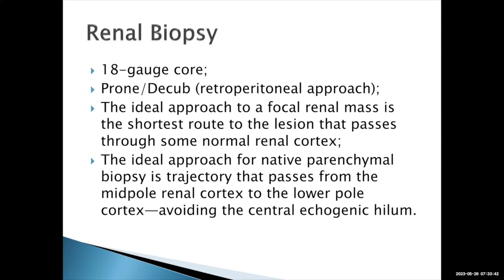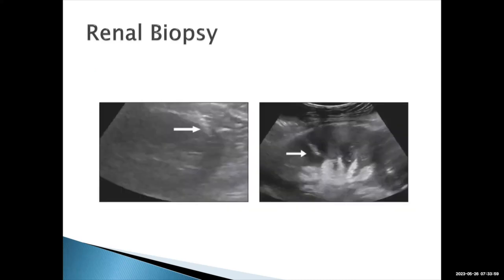Here's an example of a native renal parenchymal biopsy in the sagittal plane. You can see the kidney — cranial end, caudal end — with the biopsy needle going from the mid-pole toward the lower pole cortex, not heading toward the sinus. If the needle gets beyond the cortex-sinus junction and into the sinus, you risk bleeding into the collecting system and potentially pseudoaneurysms. The preferred approach keeps the needle in the cortex. For focal renal biopsies, we generally do two to three core biopsies, which most pathologists find sufficient.